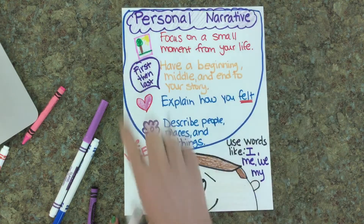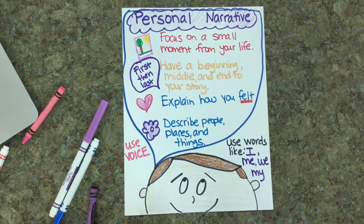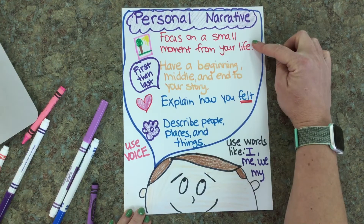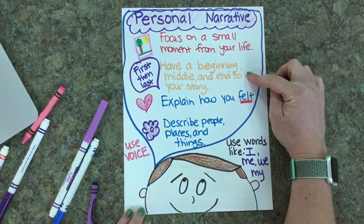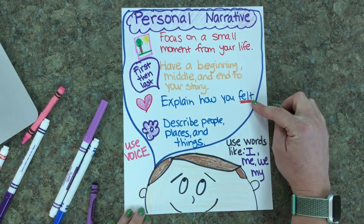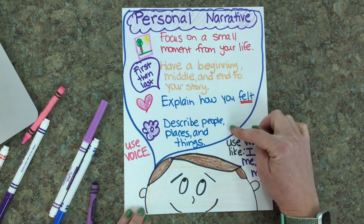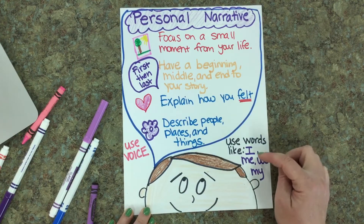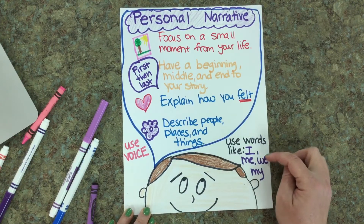Here are some things to remember while you're thinking about your personal narrative: Focus on the small moments from your life. Have a beginning, middle, and end to your story. Explain how you felt. Describe people, places, and things. Use your voice because you're telling the story. And use words such as I, me, we, and my.